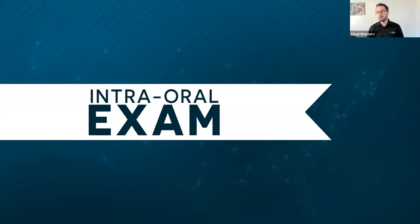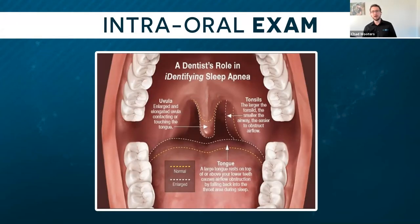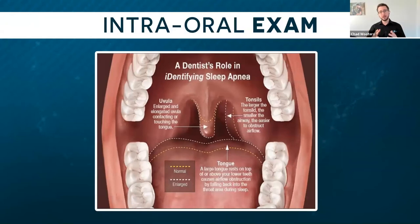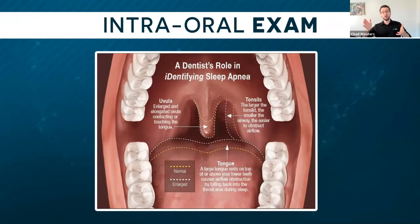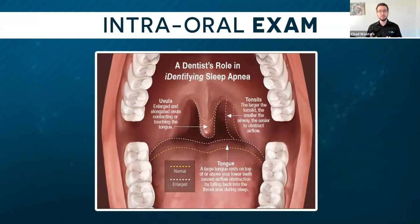When we talk about intraoral signs, the biggest one is intraoral crowding — enlarged soft tissue structures. The uvula is really important here: we're not born with long uvulas. We have pretty standard uvulas at birth, but they elongate over time when there's a decrease in pressure in the throat. That pressure actually pulls the uvula down and causes it to stretch. Think about the airway like a hose: if air can't pass through because soft tissue structures are crowding it, there's a high chance for an obstruction to occur.